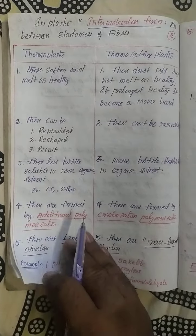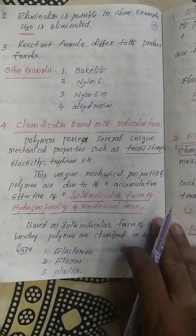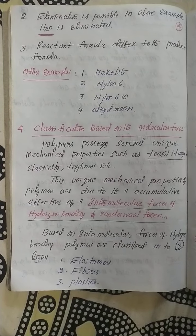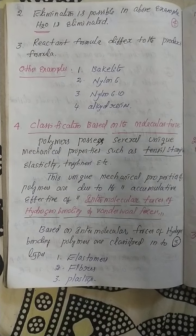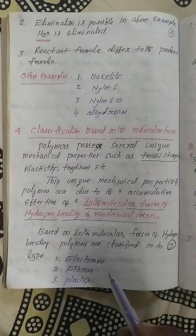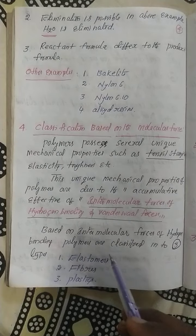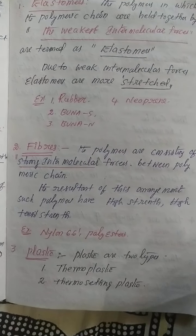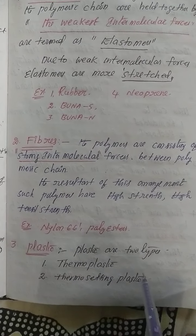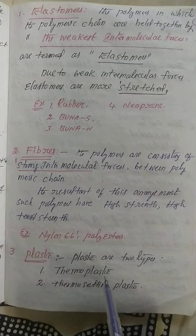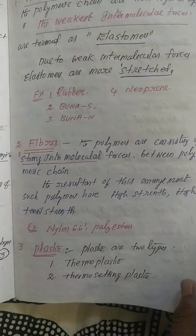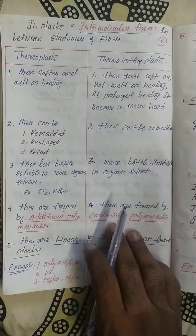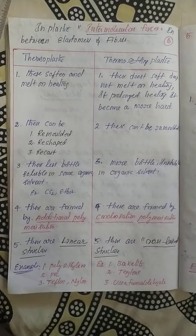This is the fourth classification — based on molecular forces. All kinds of polymers cannot show one kind of strength or elasticity; polymer to polymer they show different properties due to intermolecular forces of hydrogen bonding. Based on this, polymers are classified into three categories: elastomers with weakest intermolecular forces, fibrous with strong intermolecular forces, and plastics — either thermoplastic with moderate forces or thermosetting with very strong forces. The next classification will be discussed in the next class.